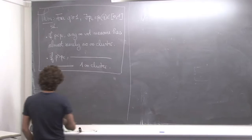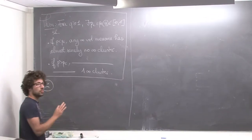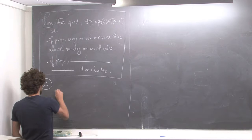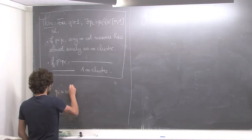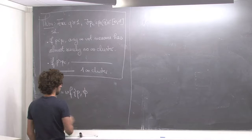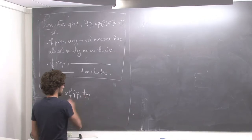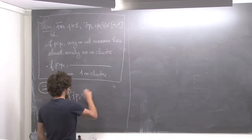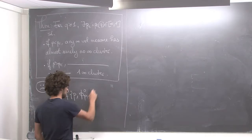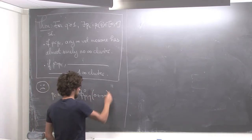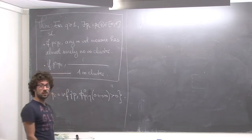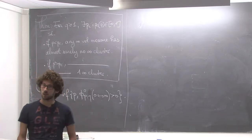Let's use phi_0 to define a potential P_c. So let's define P_c to be the infimum of the P for which the probability, for free boundary conditions, of 0 being connected to infinity is strictly positive.